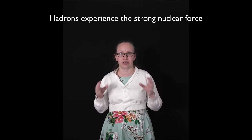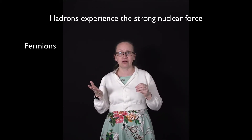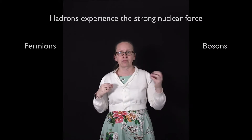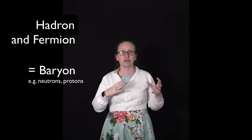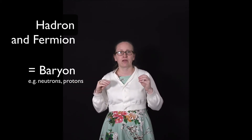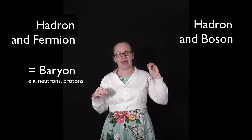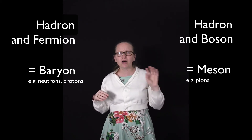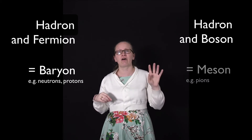Hadrons, on the other hand, are particles that do experience the strong nuclear force. Hadrons can be either fermions or bosons. When we have a hadron which is also a fermion, it's known as a baryon. Neutrons and protons are examples of baryons. When we have a hadron which is also a boson, it's known as a meson. Pi mesons are a type of meson.